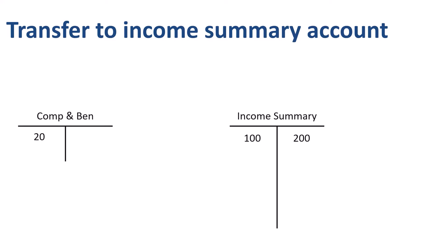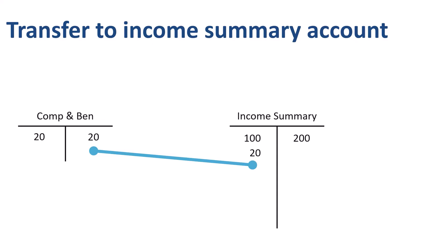Compensation and benefits has a debit balance of 20. We need to record a credit of 20 to compensation and benefits, and a debit of 20 to the income summary account, in order to make the net account balance in compensation and benefits zero. Depreciation has a debit balance of 20. We need to record a credit of 20 to depreciation, and a debit of 20 to the income summary account, in order to make the net account balance in depreciation zero.